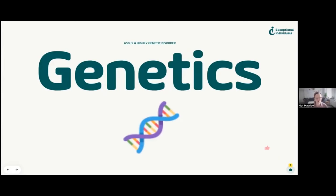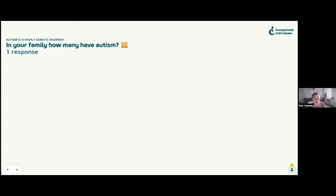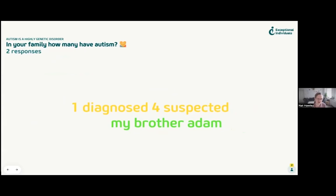ASD is highly genetic. This is why if your child has it, the likelihood of you having it is significantly higher. If one twin has it, the other is around 90% likely to have it as well. We don't always know exactly where in the genetics it originates from, but genetics is a strong factor. Autism can also skip generations — your grandparents might well have had autism but were never diagnosed.